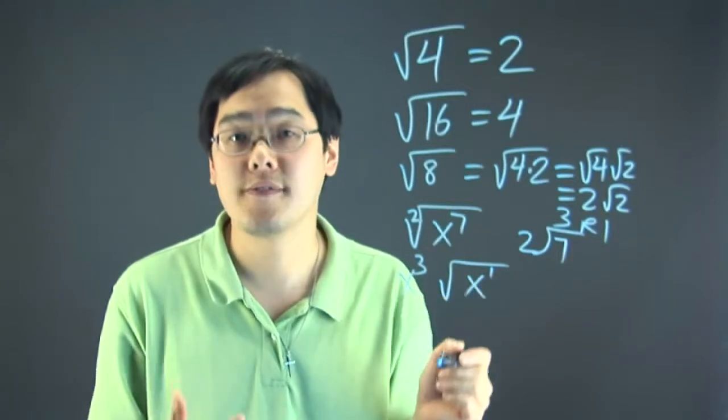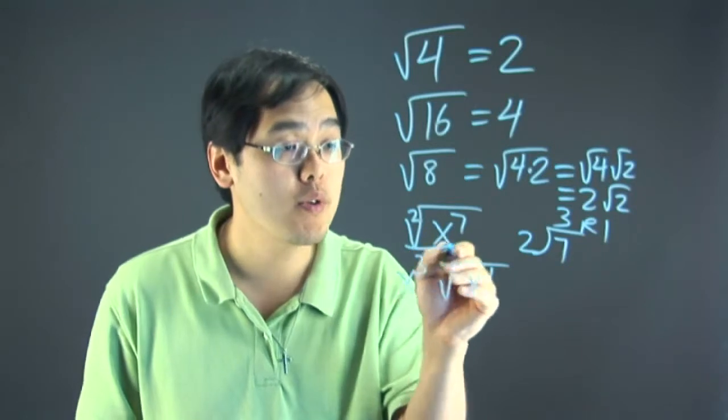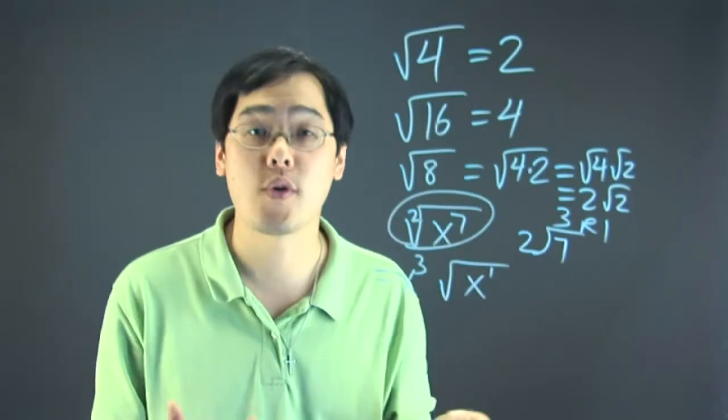I will just put x to the 1st as demonstration, even though it's not normally written. So believe it or not, the square root of x to the 7th is equal to x cubed square root of x.